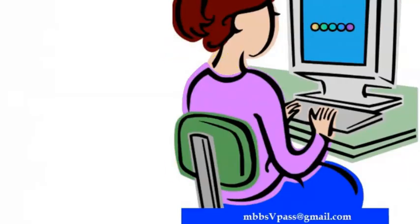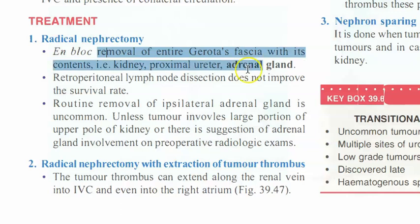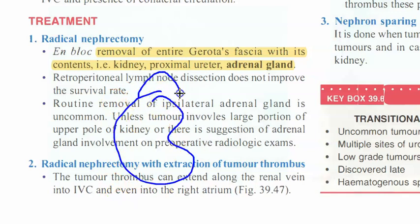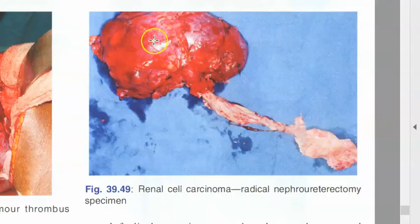Radical nephrectomy involves removal of the entire Gerota's fascia with its contents: the kidney, proximal ureter, and adrenal gland. Nothing beyond this is routinely removed. If there is a tumor thrombus in the renal vein or IVC, it is extracted along with the specimen. If the entire ureter is removed, it is called radical nephro-ureterectomy.